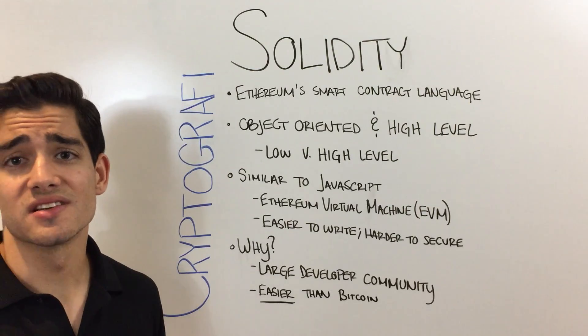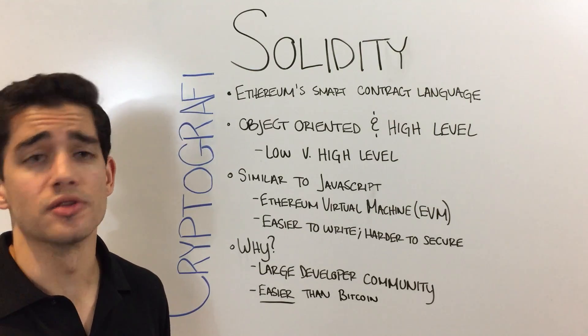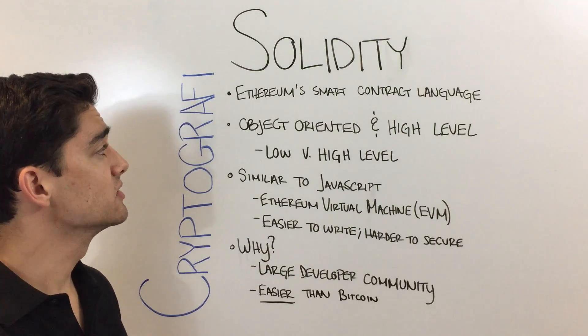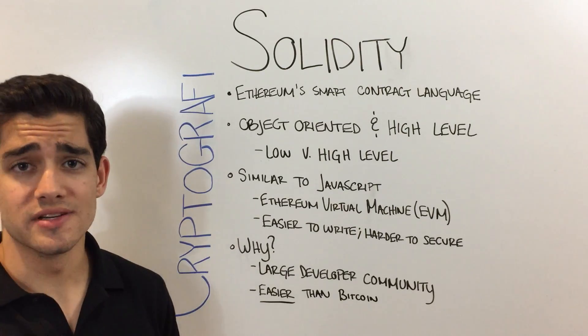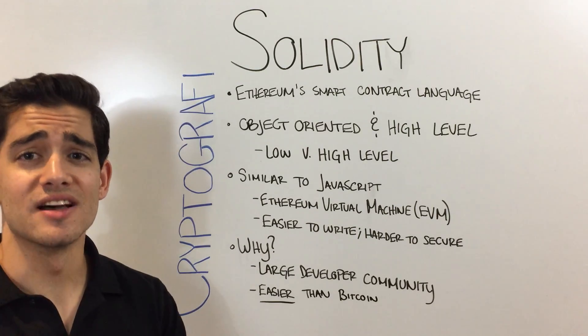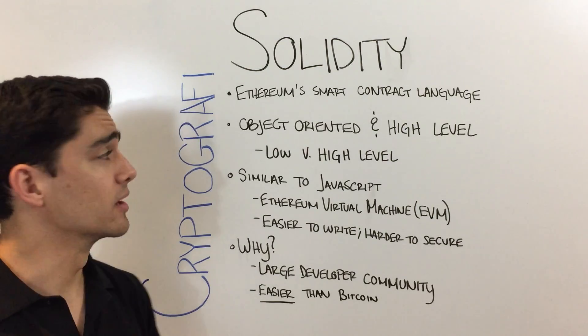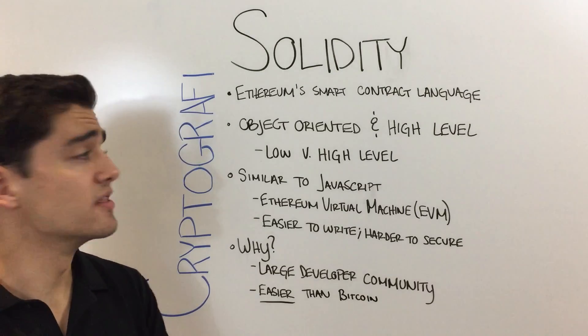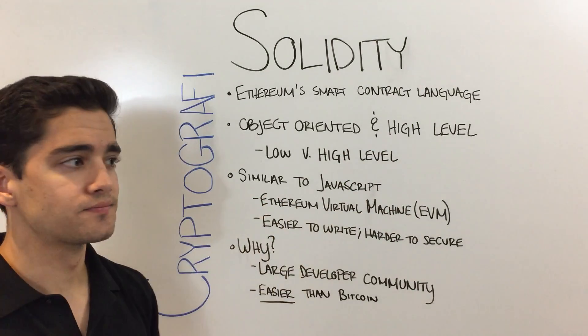Smart contracts are basically how things get done on the blockchain. And Solidity is an object-oriented, high-level programming language. What I want you to focus on there is the high-level portion.